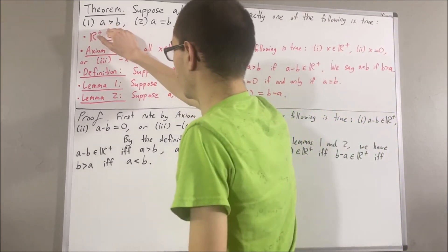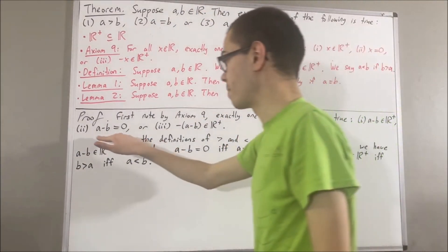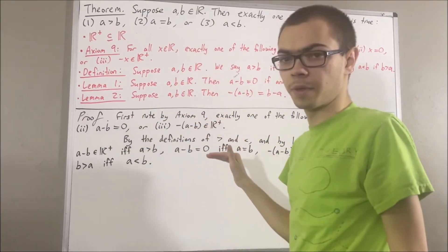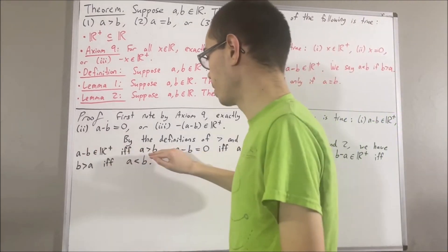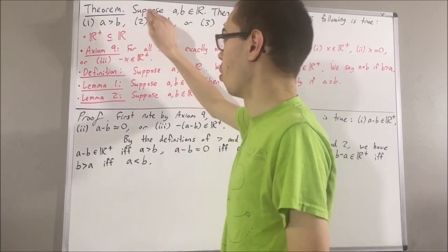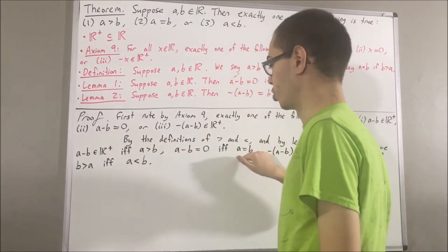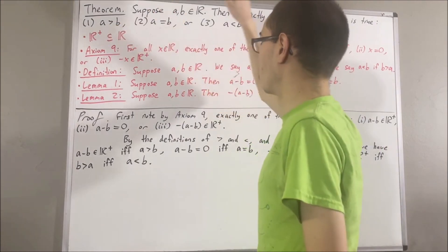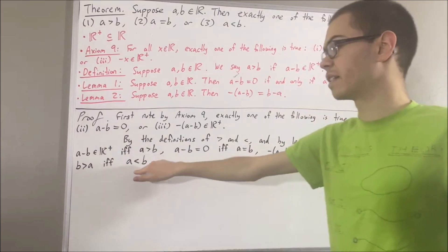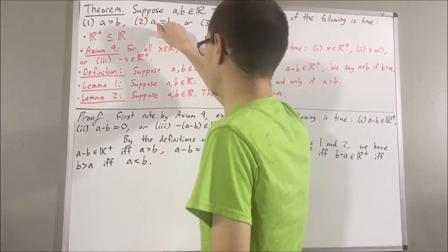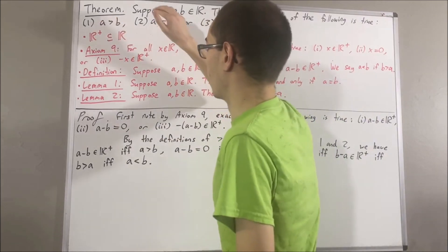To see why a is greater than b, or a equals b, or a is less than b, we split into cases. If a minus b is a positive number, then by our equivalence, a is greater than b, so the disjunction holds. If a minus b equals zero, then a is equal to b, so the disjunction holds. If the negative of a minus b is a positive number, then a is less than b, so the disjunction holds. In all cases, it follows that a is greater than b, or a equals b, or a is less than b.